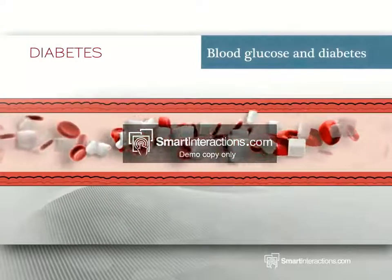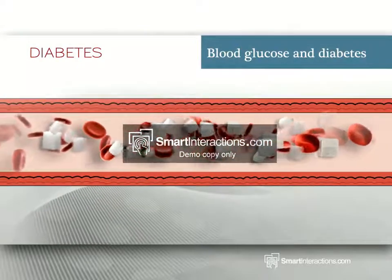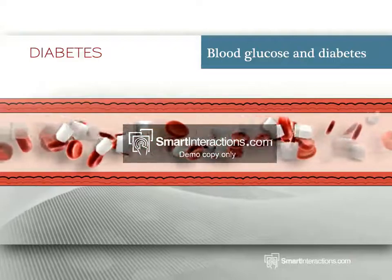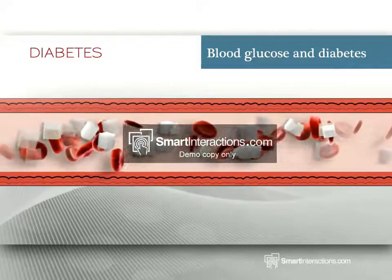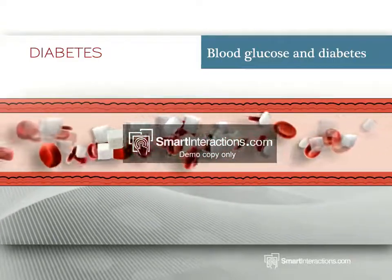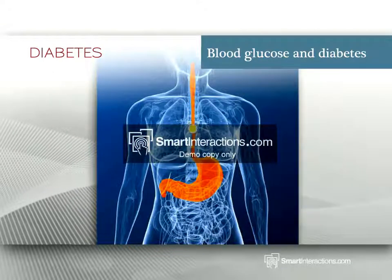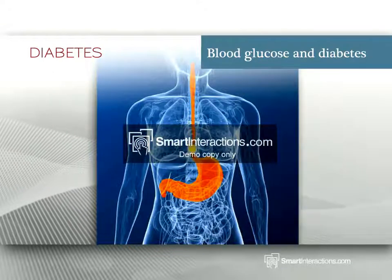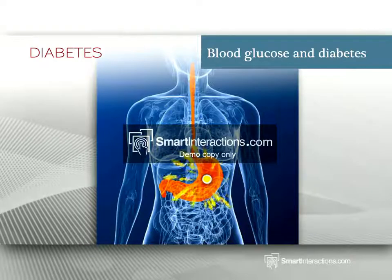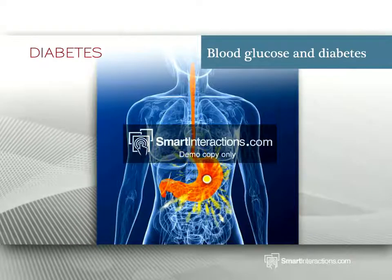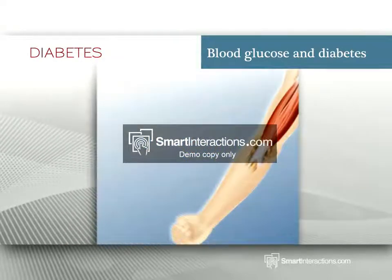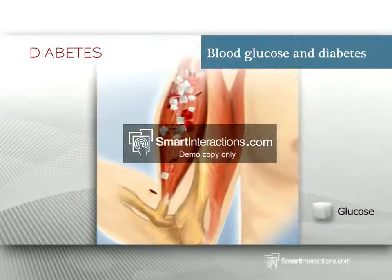Blood glucose and diabetes. Diabetes is a chronic disease which affects how your body uses blood glucose, commonly called blood sugar. Glucose enters the bloodstream after the digestion process when our stomach breaks down the food we eat to create fuel for our body. Glucose is carried throughout the body by the bloodstream.